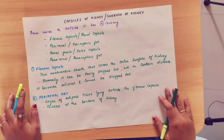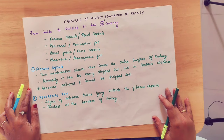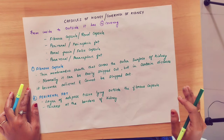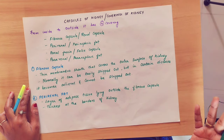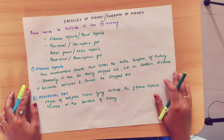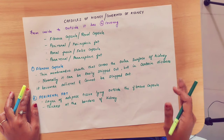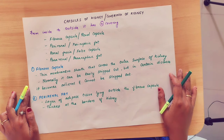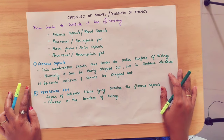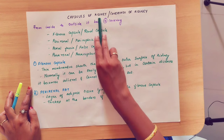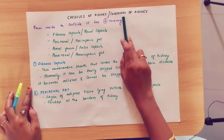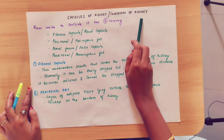So far, we have seen the kidney's introduction, location, size and shape, external features and relations. Now we will see the capsules of the kidney, otherwise called as the covering of the kidney.